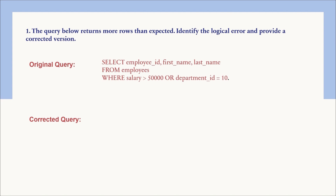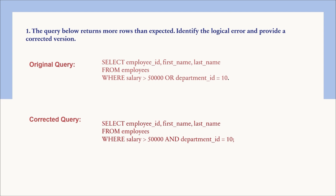Since the result returns more rows than expected, the OR operator causes the query to return more rows because it retrieves all employees with a salary greater than 50,000 OR all employees in department ID 10, regardless of salary. Two separate conditions are applied independently. Our corrected version replaces the OR condition with AND, retrieving only employees from department ID 10 who also have a salary greater than 50,000. That prevents extra rows from being returned.